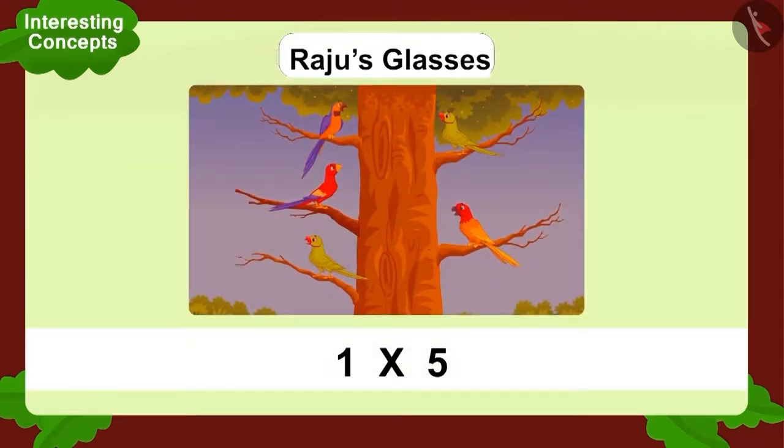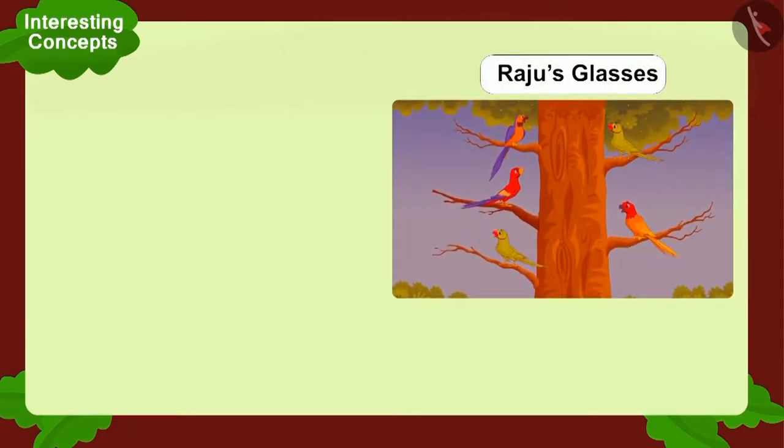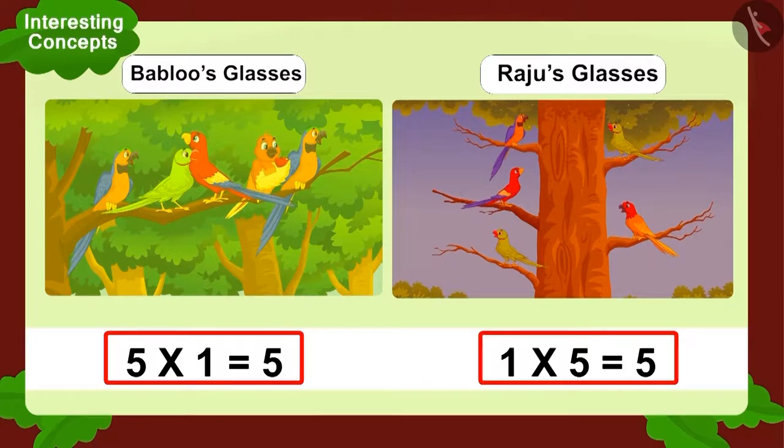Now, let's look at Raju's multiplication. One multiplied by five. Can we write it using addition? No. Why so? Because one multiplied by five is one time five, which gives you five. Raju saw as many birds as Bablu. Both of them saw five birds.